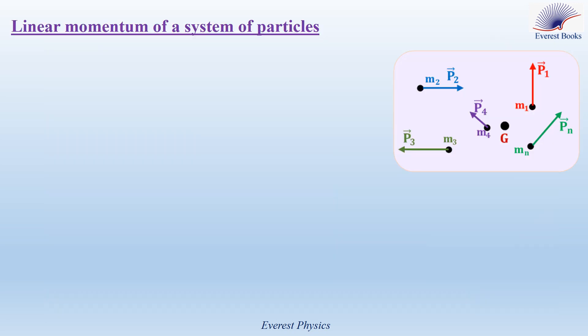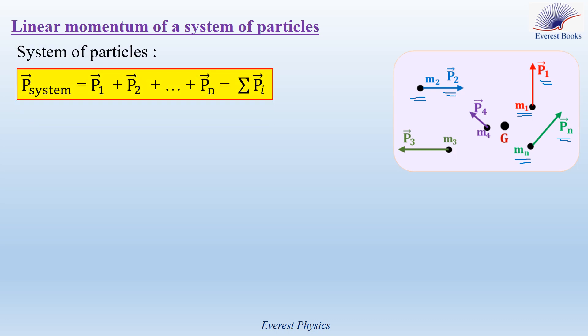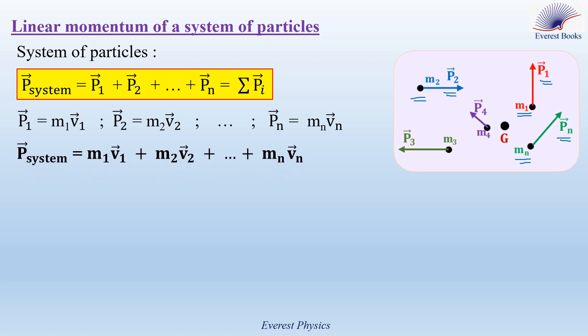Let's move to the linear momentum of a system of particles. Consider a system of N particles: the first particle of mass M1 and linear momentum P1, the second particle of mass M2 and linear momentum P2, and finally the nth particle of mass Mn and linear momentum Pn. The linear momentum of the system is P_system equals P1 plus P2 plus ... plus Pn, which equals M1V1 plus M2V2 plus ... plus MnVn.